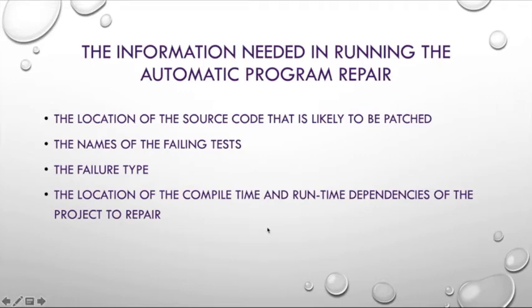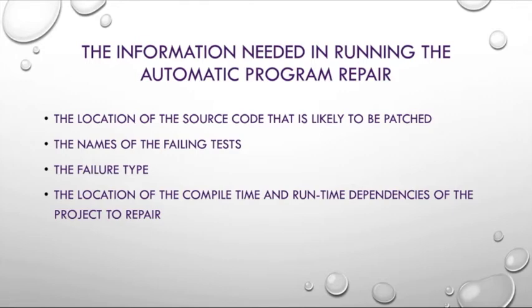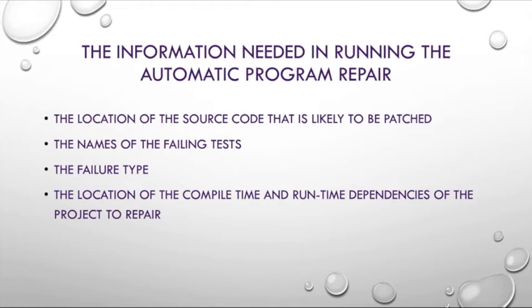What information is needed for running automatic program repair? The location of the source code is needed for synthesizing the patch, containing file names and line numbers pointing to particular statements. The names of failing tests must be directly provided to the repair tool to save time re-executing the entire test suite. The failure type — for example, null pointer exception or assertion error — is used to select the kind of repair tool to use for patch generation. The location of compile-time and runtime dependencies of the project must also be provided for dynamic analysis.